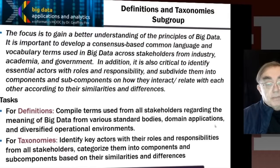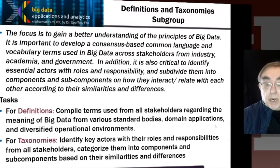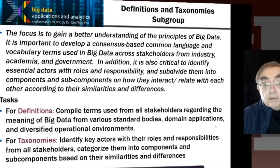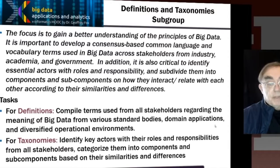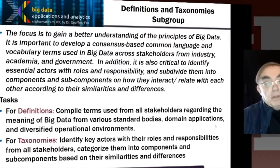The definitions and taxonomies require compiling ideas from various sources, trying to reconcile them and get some consensus definition. Taxonomies require making lists and making certain that all possibilities are covered, and then trying to put some hierarchical order on them in terms of components and subcomponents.